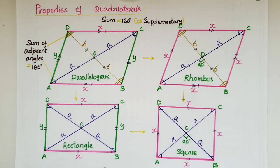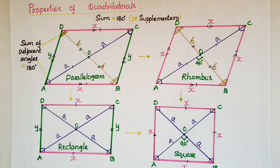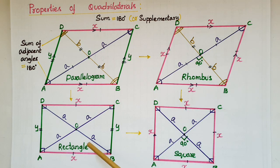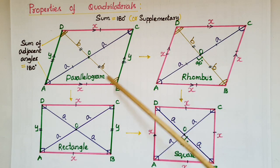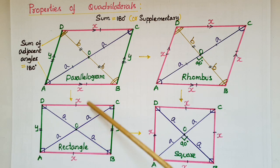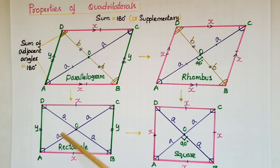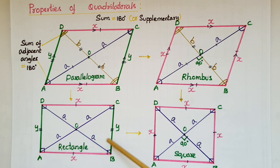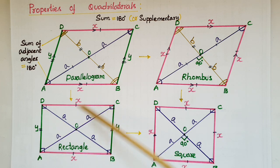Next is rectangle. Rectangle is also a parallelogram in which opposite sides are equal. In a rectangle, all angles are 90 degrees and diagonals are equal.